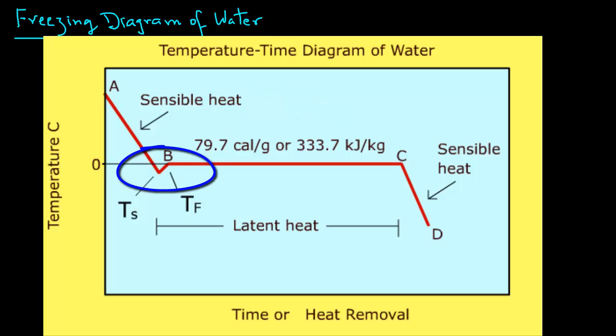Now you see a small kink in the temperature plot. First we see a small drop in temperature to Ts from 0 degree C and then the temperature increases to point B. This part of the curve represents supercooling.